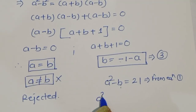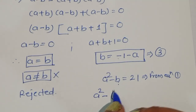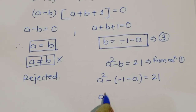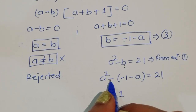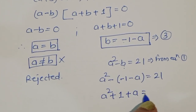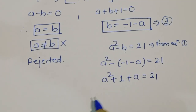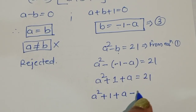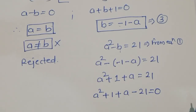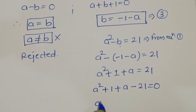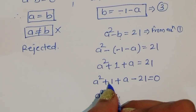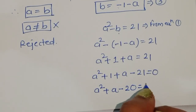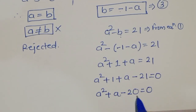Substituting b = -1 - a into equation 1: a² - (-1 - a) = 21, which gives a² + 1 + a = 21. Rearranging, we get a² + a + 1 - 21 = 0, so a² + a - 20 = 0.